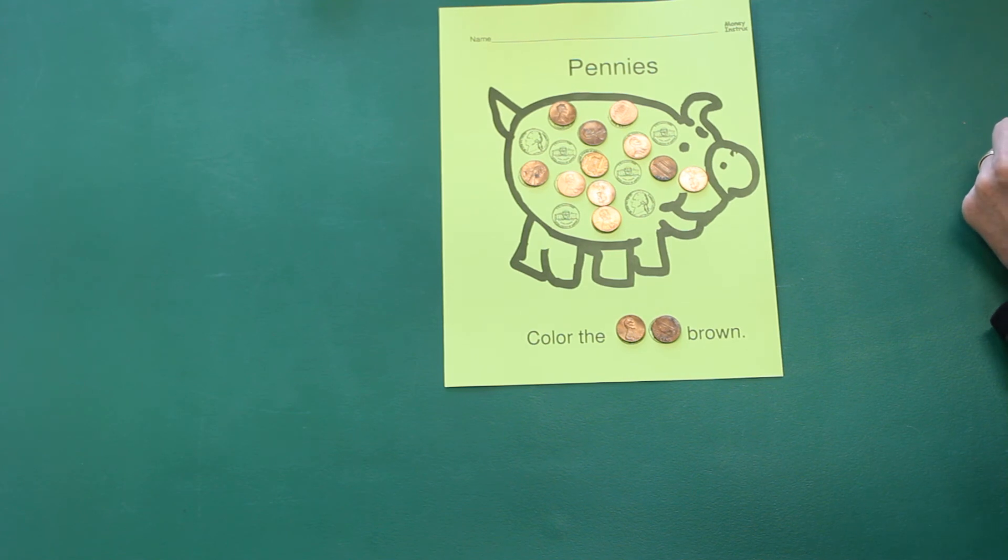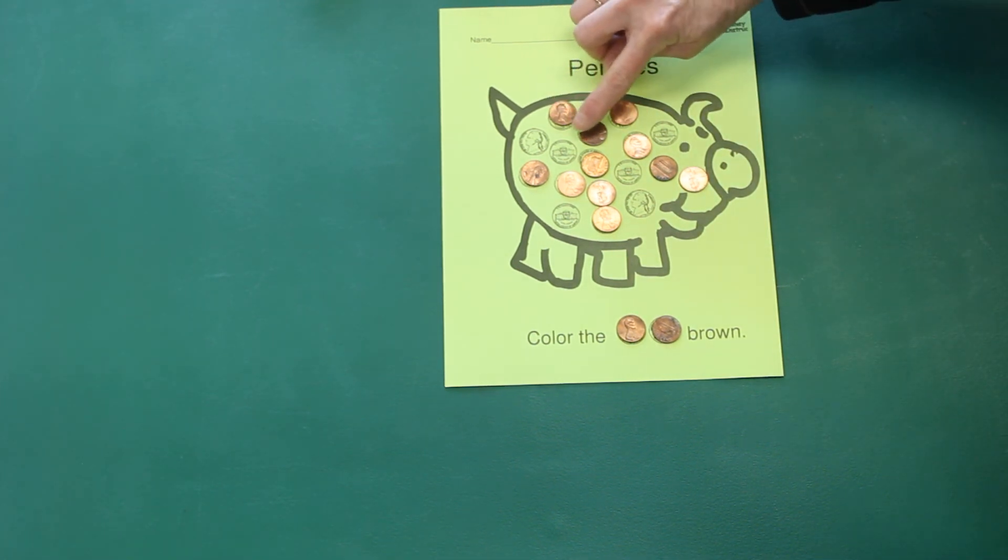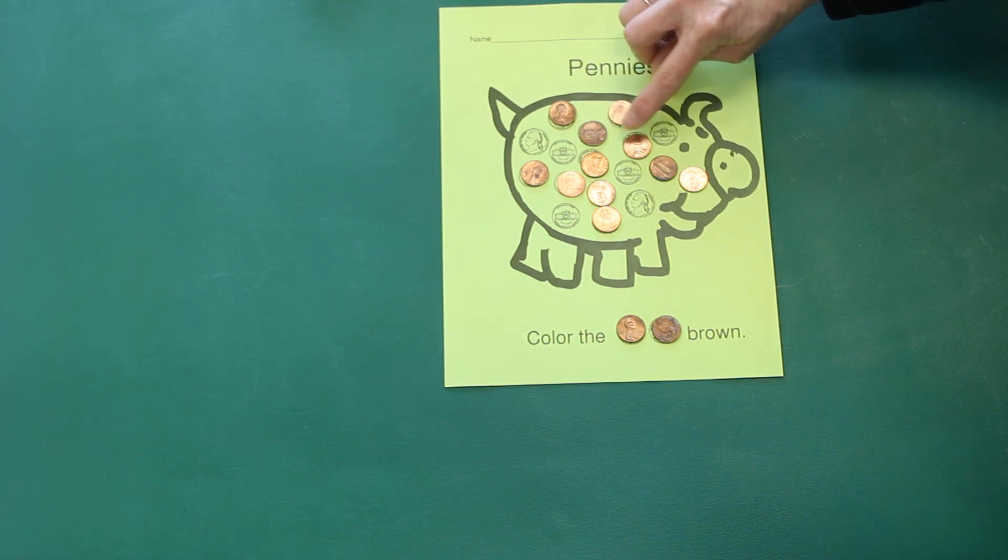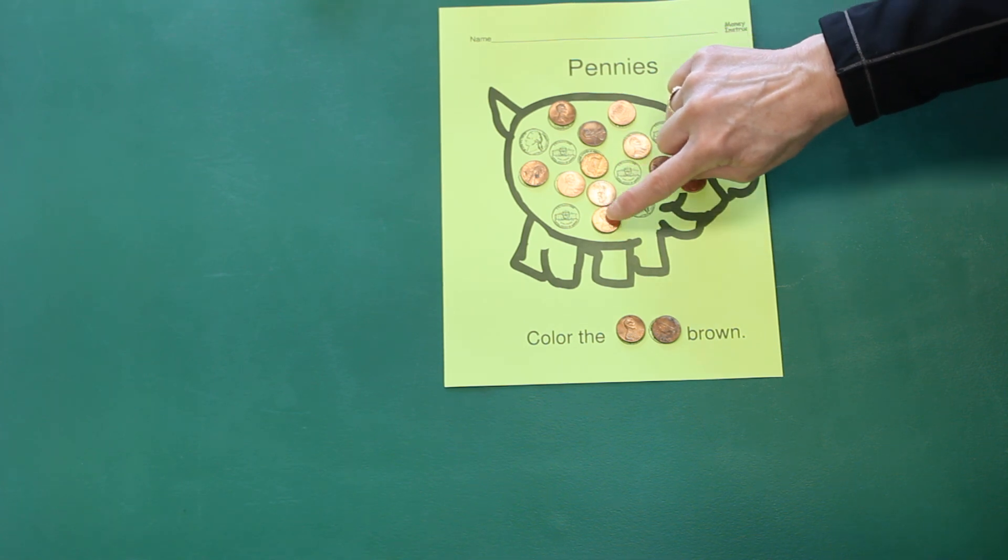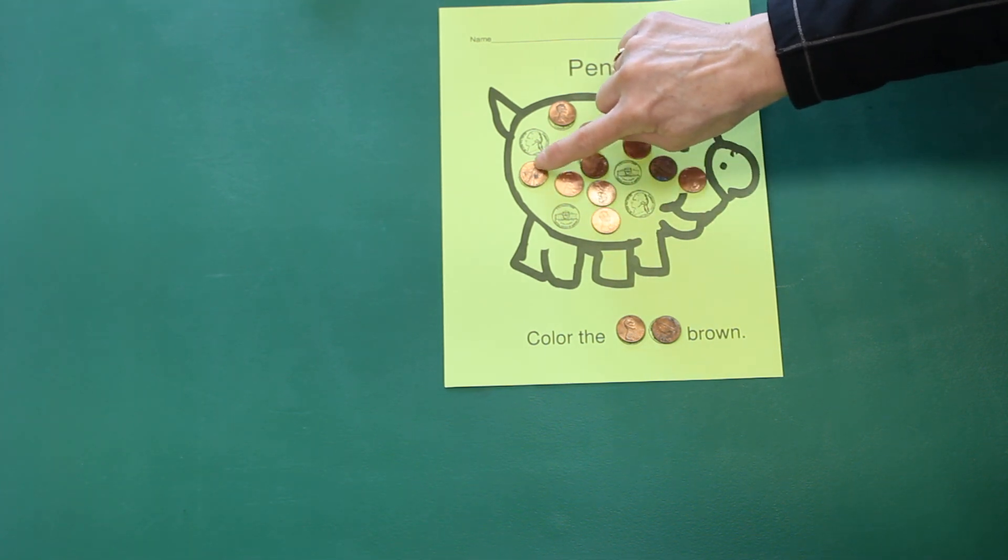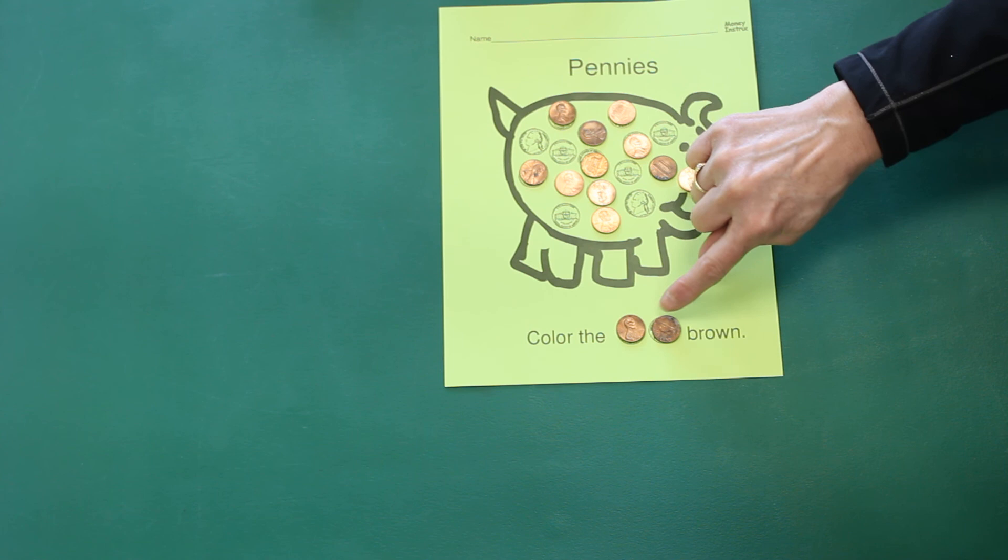All right, let's see how many pennies are in our piggy bank all together. One, two, three, four, five, six, seven, eight, nine, ten, eleven, twelve, thirteen.